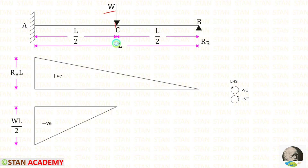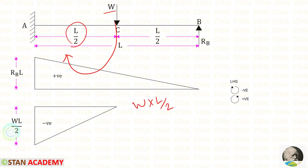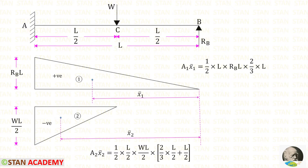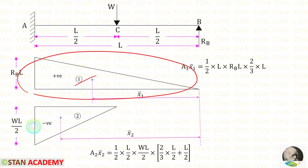Since it is positive we have to draw the diagram above the line. The load W is acting in the clockwise direction so that will be negative, and the distance is L by 2. W into L by 2 gives WL by 2. Since it is negative we have to draw the diagram below the line. Let us keep this diagram as 1 and this diagram as 2.